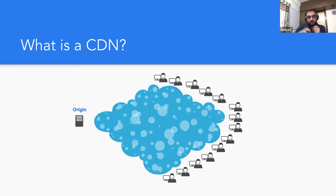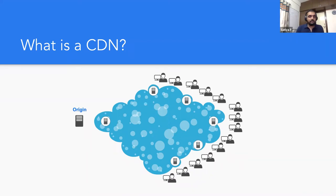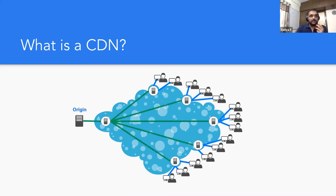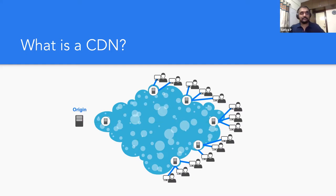The way you'd deal with this e-commerce logistics problem is to set up warehouses in tier two, tier three cities, stock up items, and deliver from there whenever an order comes in. When an order comes in for a non-perishable item, if it's in the nearby warehouse, you deliver it — that's how you get same-day or one-day delivery. We've seen this working well in day-to-day lives, and the same concept applies to your content delivery network.